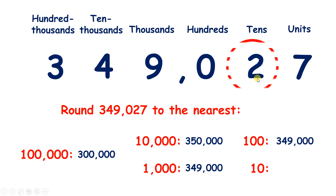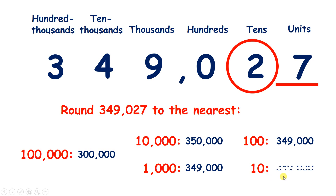And now to the nearest 10, if we look to the right it's 5 or more — it's 7 — so we're rounding up. Those two 10s become three 10s, which means we have 349,030.